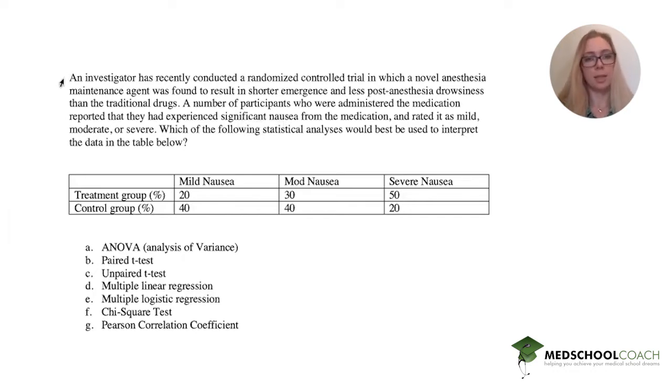So I'll get started. An investigator has recently conducted a randomized control trial in which a novel anesthesia maintenance agent was found to result in shorter emergence and less post-anesthesia drowsiness than the traditional drugs. A number of participants who administered the medication reported that they had experienced significant nausea from the medication and rated it as mild, moderate, or severe. Which of the following statistical analyses would be best used to interpret the data in the table below.